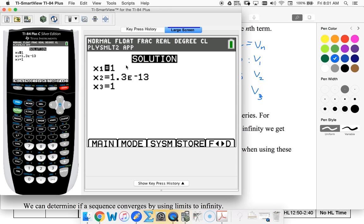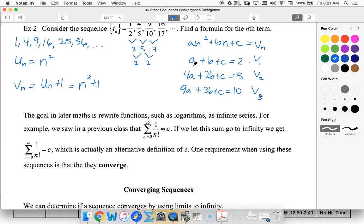And notice this, 1.3 times 10 to the negative 13 is so close to 0. Your calculator in processing it didn't end up with exactly 0, but this number is so close to 0, you have to know that it really is 0. So an squared plus bn plus c, 1n squared plus 0 plus 1, which is what we ended up with here.